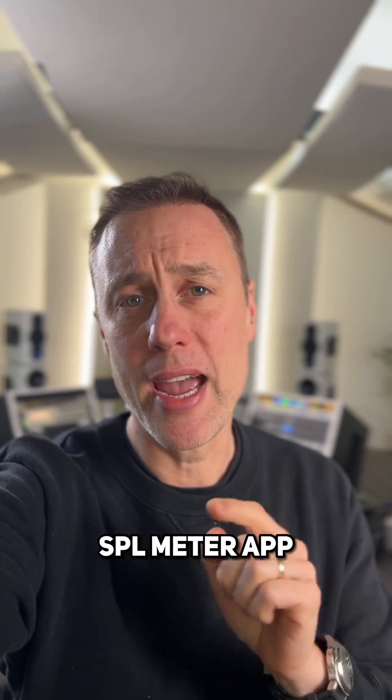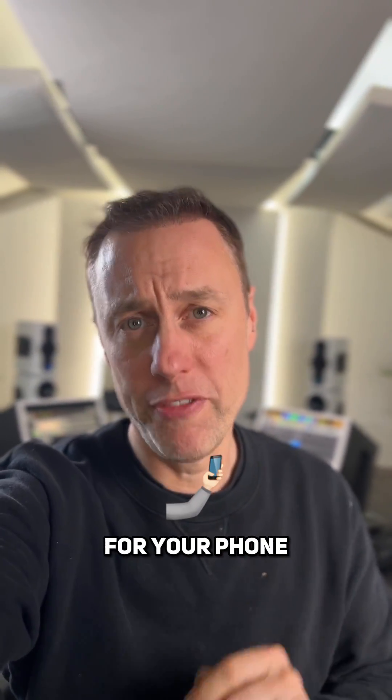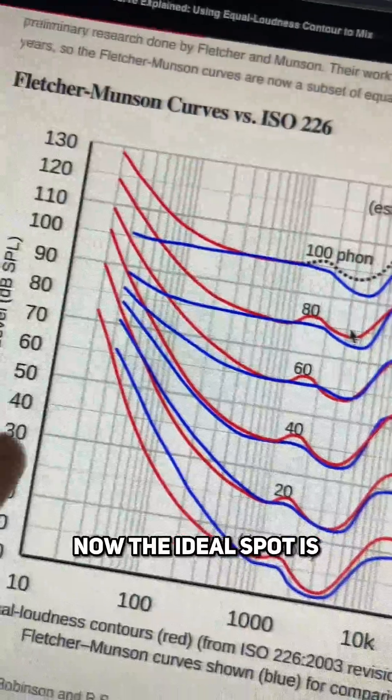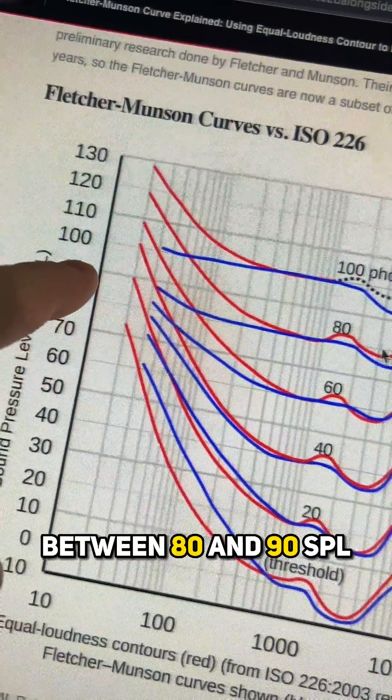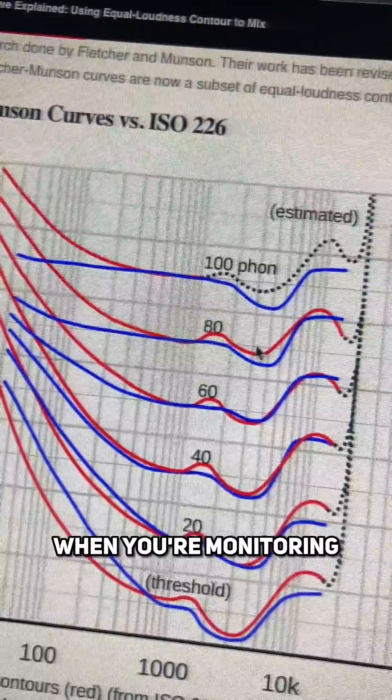Firstly, grab yourself an SPL meter app for your phone. Now the ideal spot is between 80 and 90 SPL on the meter when you're monitoring.